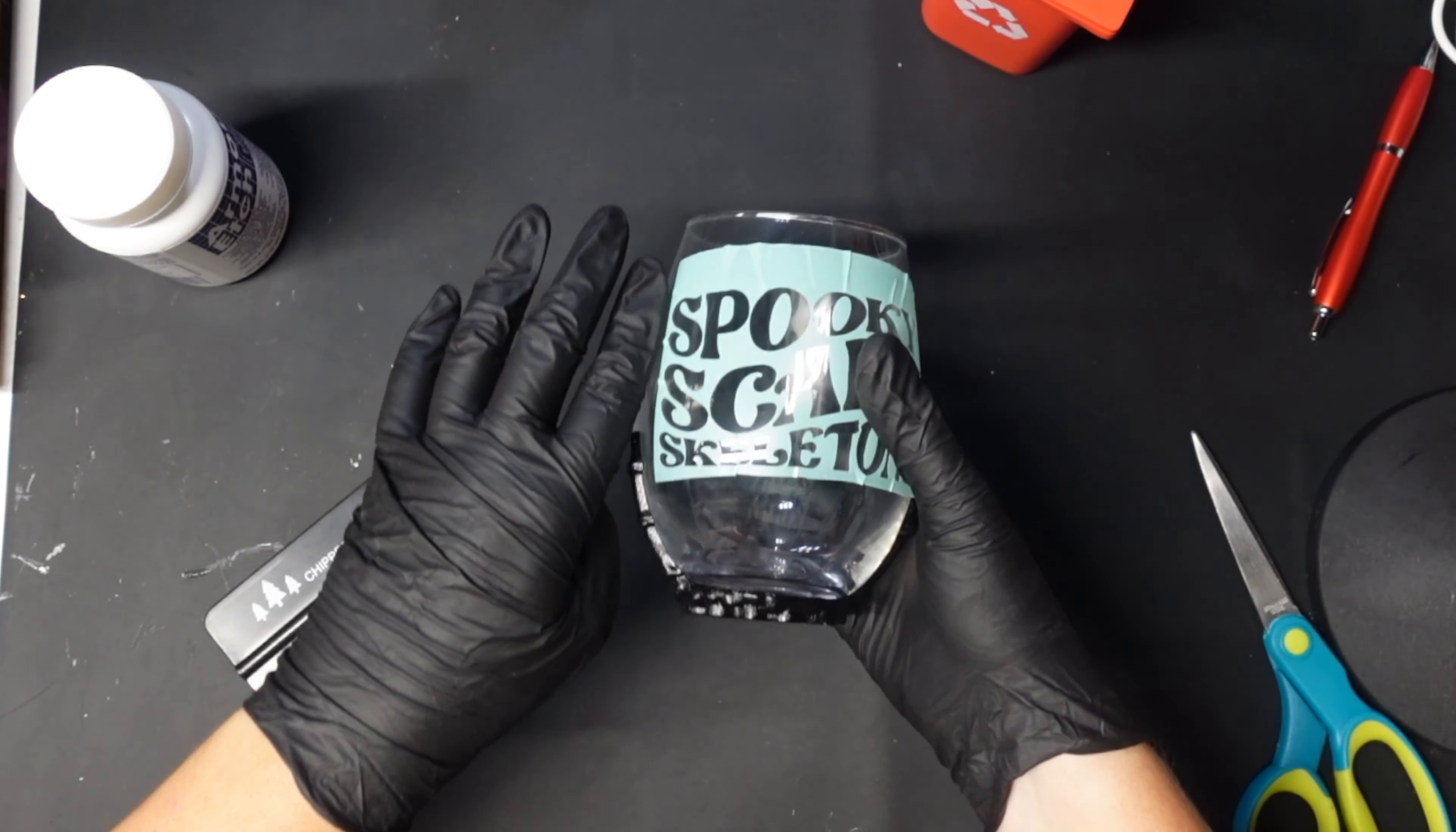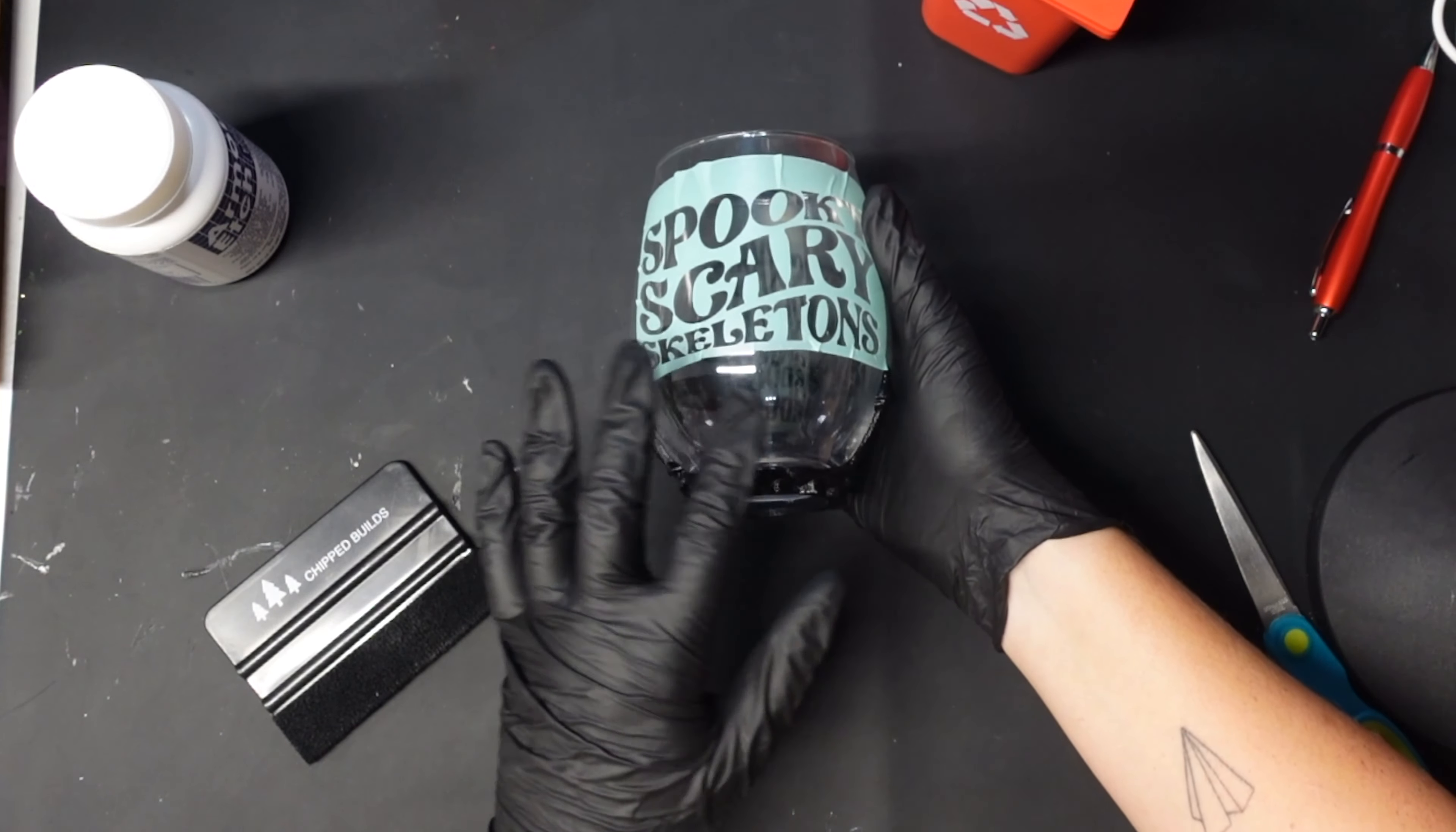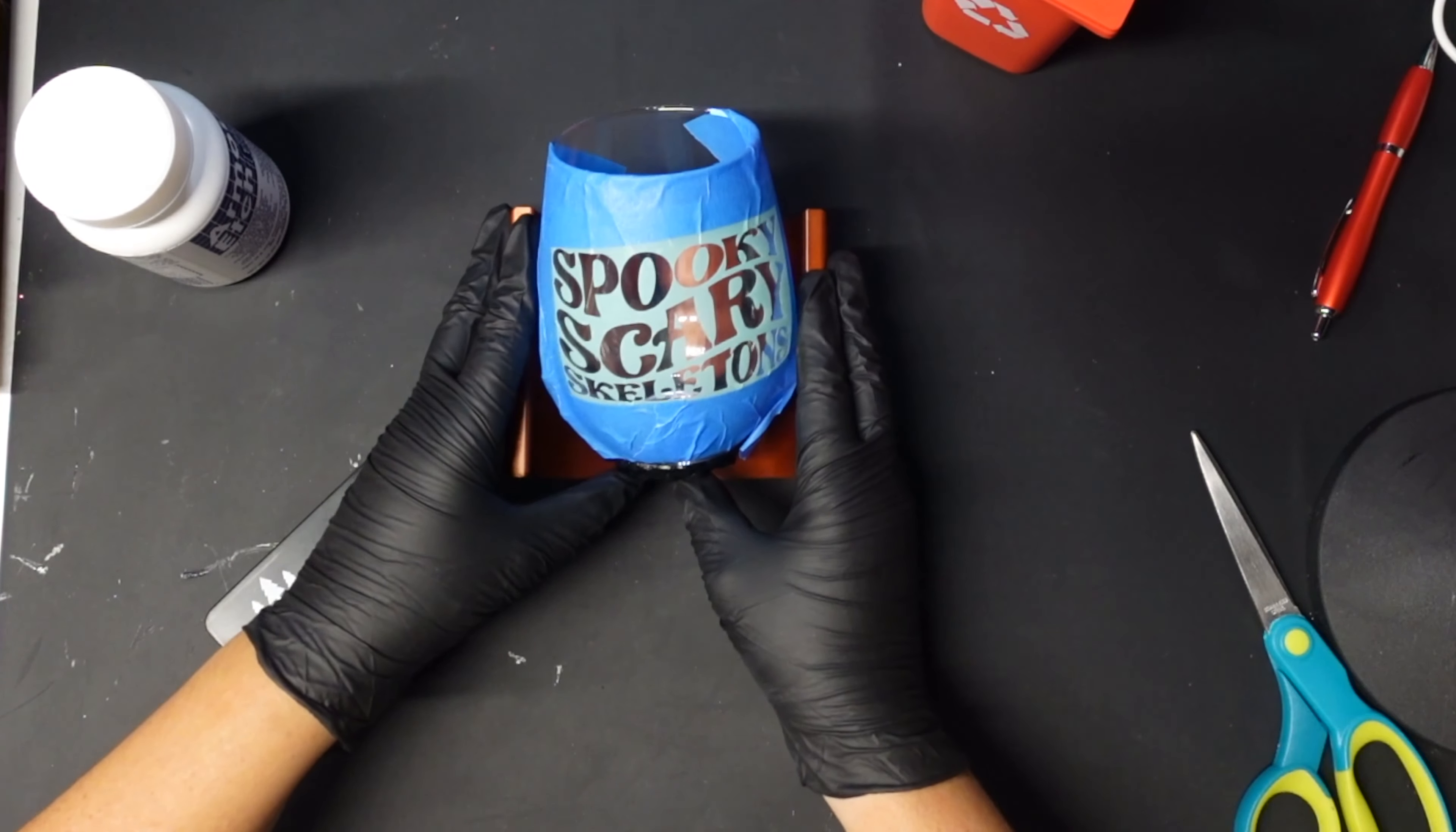I'm gonna get some painters tape that way I can protect the sides because I didn't really leave myself enough wiggle room to get the cream on. Using the painters tape is really just gonna help make sure that we don't get any of the etching cream in any other areas that we do not want.